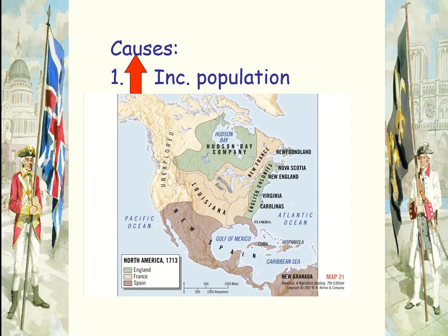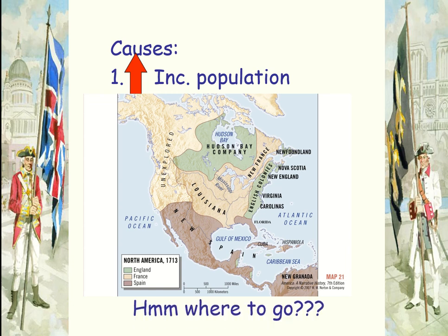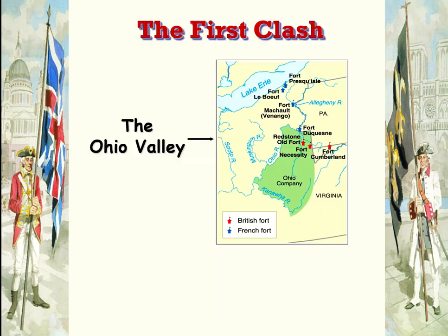Of all the wars we'll talk about, this is the only one that has one cause, and that is increased population — because we want to move to the west. This map shows that the French are occupying all of this middle area, the English occupy the 13 colonies and Hudson Bay, and the fighting is going to be in the area between them — basically from up by Quebec all the way down to modern day West Virginia. We need territory that is owned by someone else, and that's never a good idea.